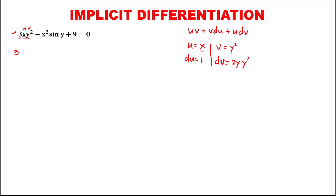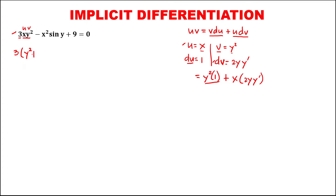Apply now this formula: v times du, so y squared times 1, then plus u times dv, so x times 2y times y prime. This becomes y squared plus 2xy times y prime.